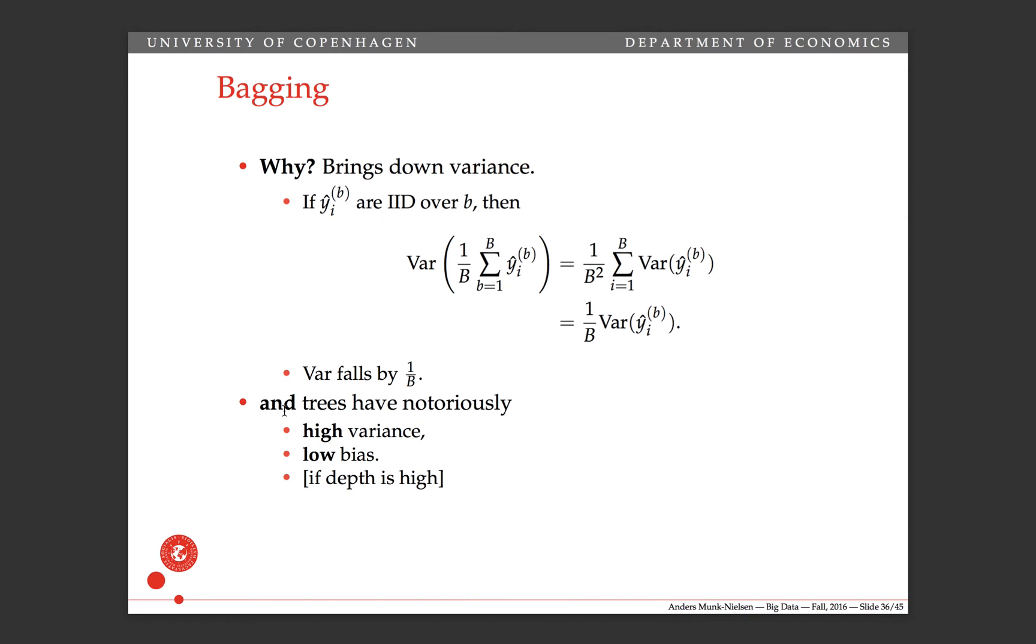And one of the things that makes bagging really relevant for regression trees is that regression trees notoriously are high variance, low bias predictors if the depth is high.